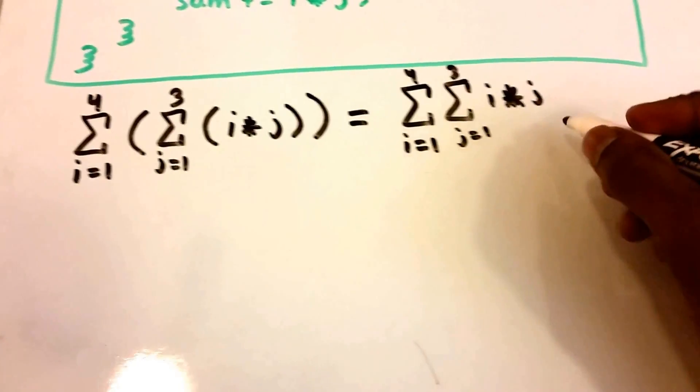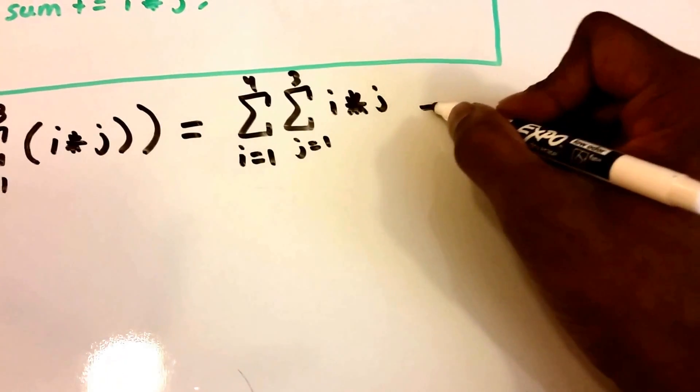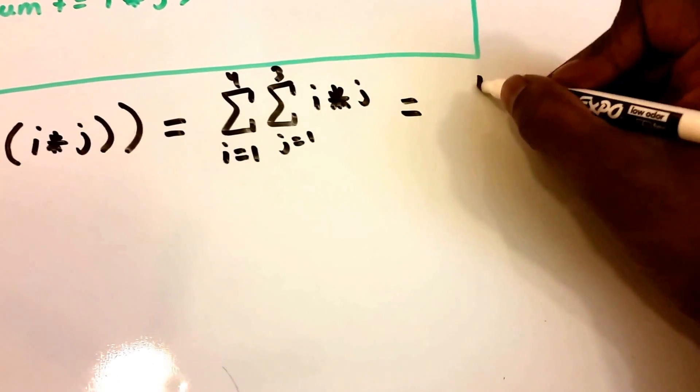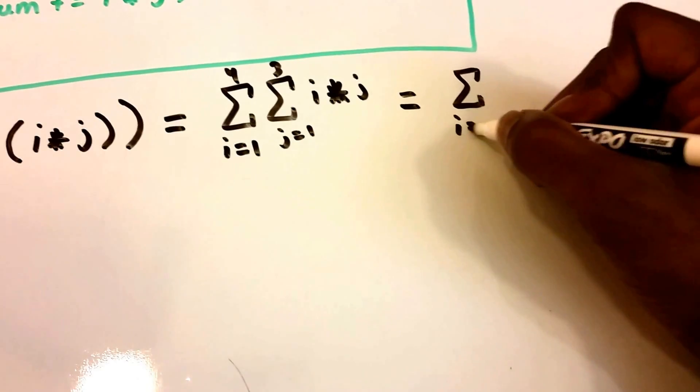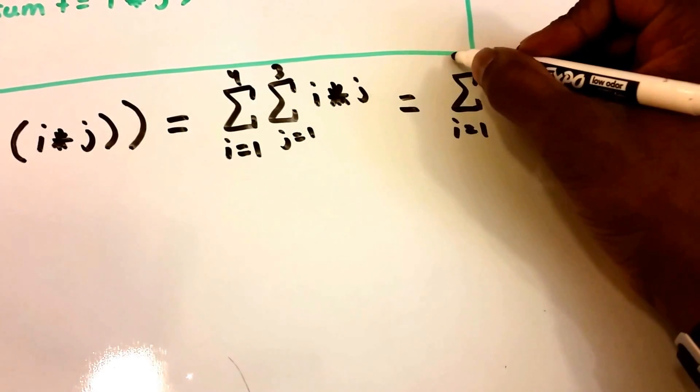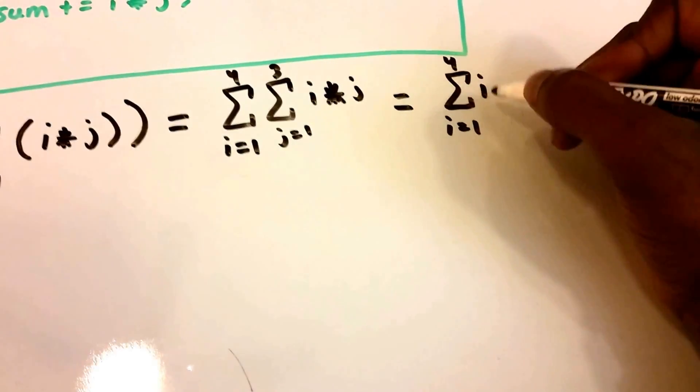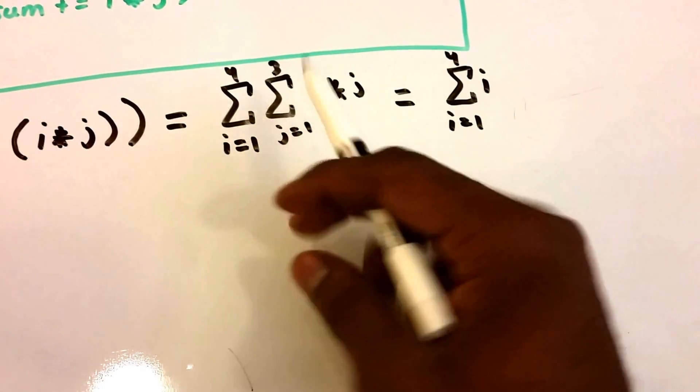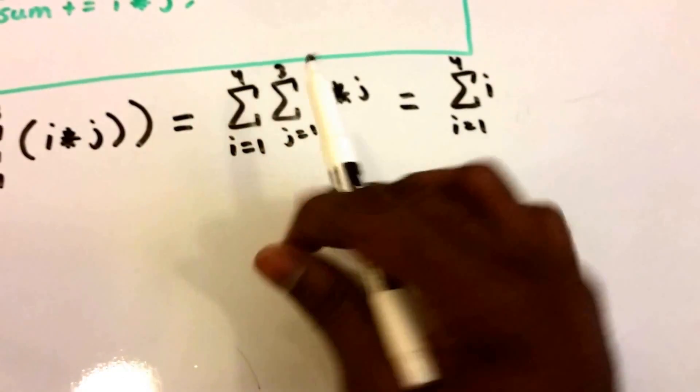And now what we can do is we can rewrite this again, so we're going to get the summation from i equals 1 all the way to 4 of i, because we can pull out that i because it's really a constant within that second summation.